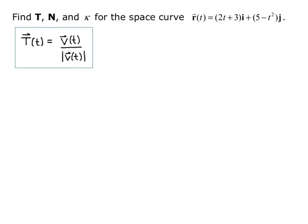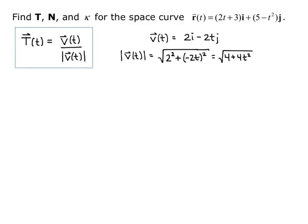So we want to find these pieces. Velocity v of t equals the derivative of position. The derivative of 2t plus 3 gives me 2i, and the derivative of 5 minus t squared j gives me negative 2t j. So velocity is 2i minus 2t j. Now the magnitude of velocity equals the square root of 2 squared plus negative 2t squared, which equals the square root of 4 plus 4t squared. Factoring out the 4, I get 2 times the square root of 1 plus t squared.